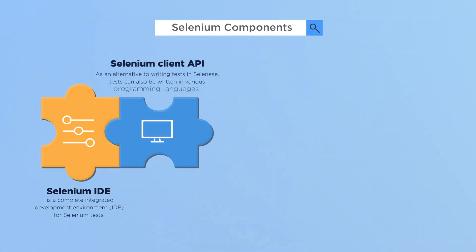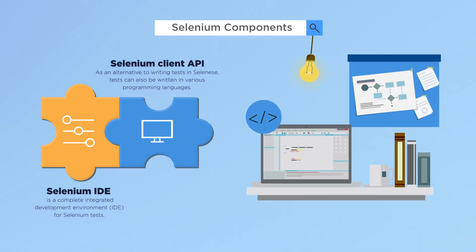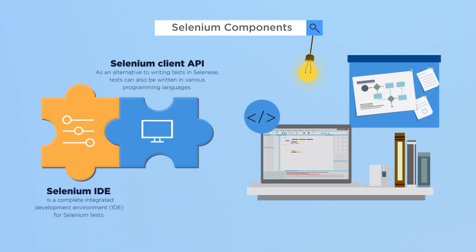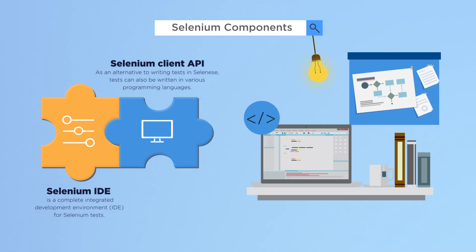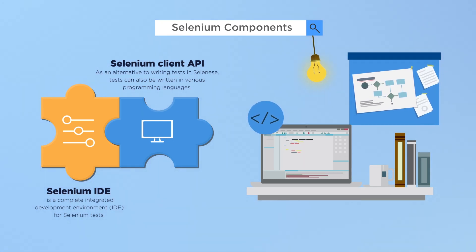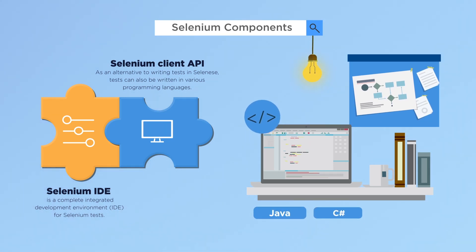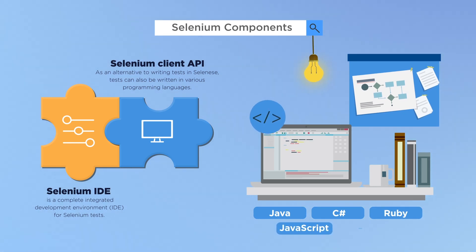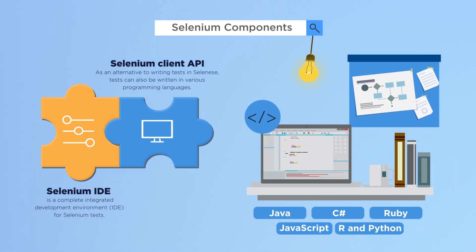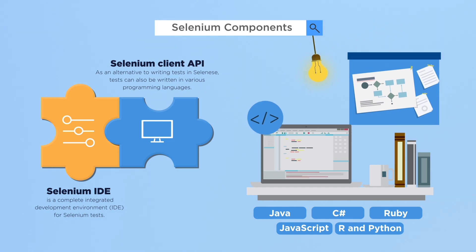Let's proceed with the Selenium Client API. As an alternative to writing tests with Selenese, tests can also be written in various programming languages. These tests then communicate with Selenium by calling methods in the Selenium Client API. Selenium currently provides client APIs for Java, C#, Ruby, JavaScript, R, and Python. With Selenium 2, a new client API was introduced with WebDriver as a central component. However, the older API using class Selenium is still supported.